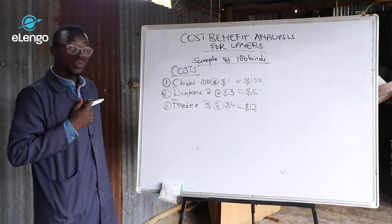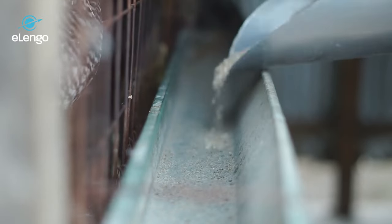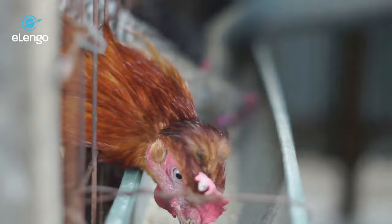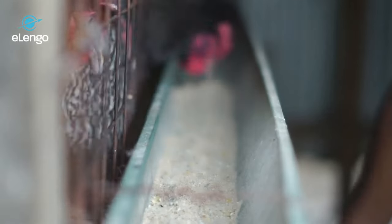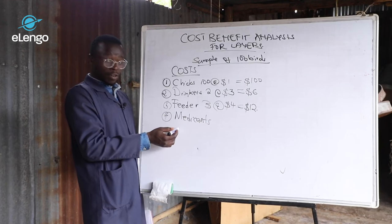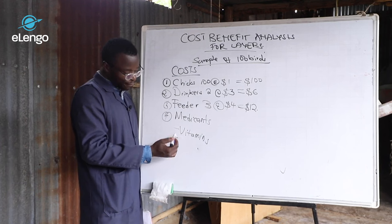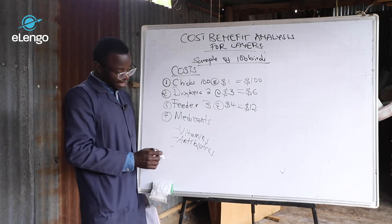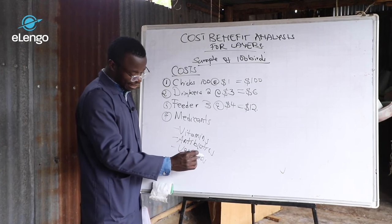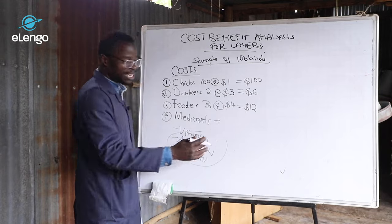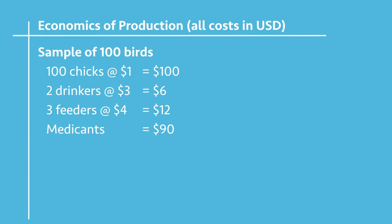Item number four is medication. When you talk of medications, this encompasses vitamins, antibiotics if need be — although we try so much to avoid antibiotics in our production — and vaccines, which are a must since we want to avoid disease as much as possible. The cost of these three items shall be under medications, given as an approximation. Since layers are on the farm for quite an extended period, we shall give it an average of $90.